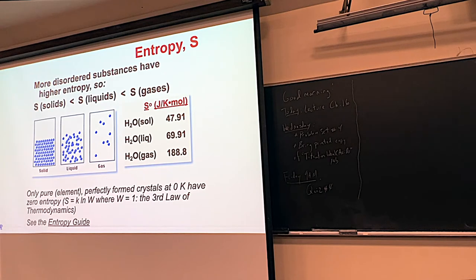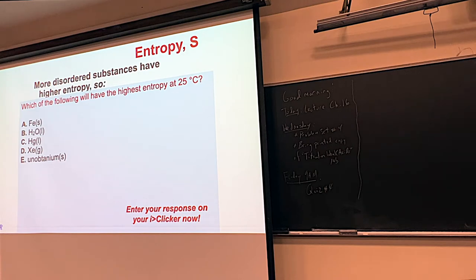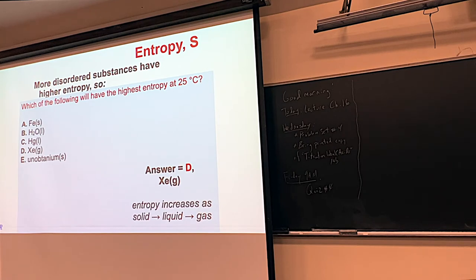So if you saw a question asking what has the highest entropy at 25 degrees Celsius, you can automatically look for the gas, because gases always have more entropy than solids and liquids. Looking at those values, gases are absolutely the highest. Gases are always higher than liquids, and liquids are higher than solids. So in that example, I would automatically say that's going to be the xenon gas — gases have more entropy than anything else.